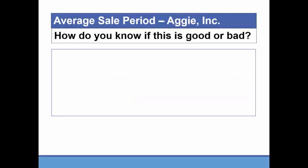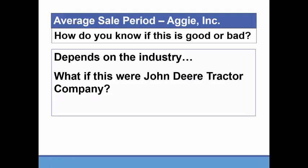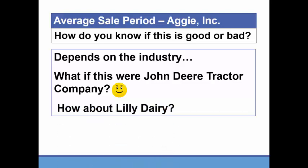How do we know if this is good or bad? One of the large determinants is the industry. Think about if Aggie Inc. is John Deere tractor company — selling average inventory twice a year is pretty good for big ticket items that take a while to move. But if this were a dairy company, selling inventory only every 6 months would probably not be good at all.